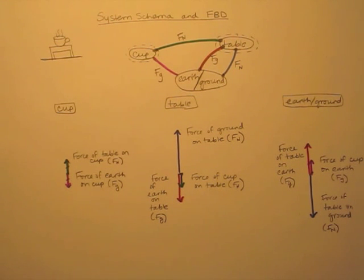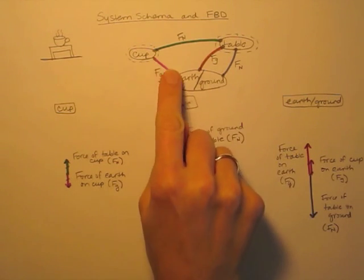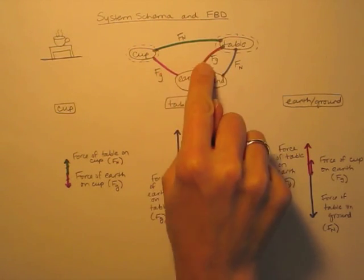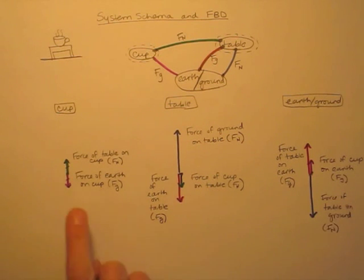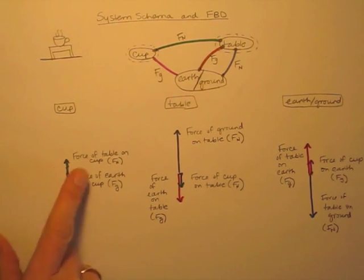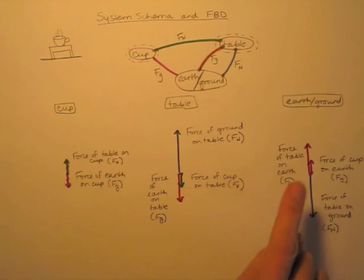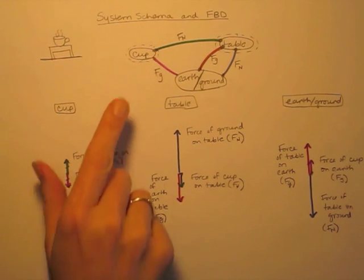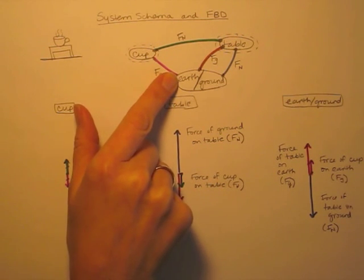That's an example of how to draw a color-coded system schema diagram where each interaction is a different color. On the free body diagrams we can see where the different forces are that are part of each interaction force pair. You'll notice that they're always on different free body diagrams, because the two parts of an interaction act on different objects.